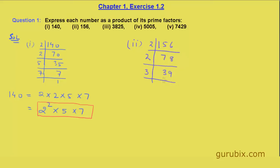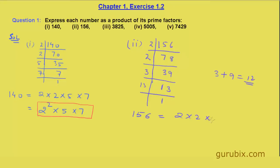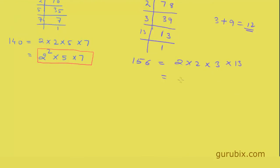Now we see that the sum of the digits of 39 is 3 + 9 = 12, and 12 is a multiple of 3, so 39 will be divided by 3. We get 13 as quotient. Dividing 13 by 13 we get 1. So the prime factorization is complete and we can write the prime factors as 2 × 2 × 3 × 13.